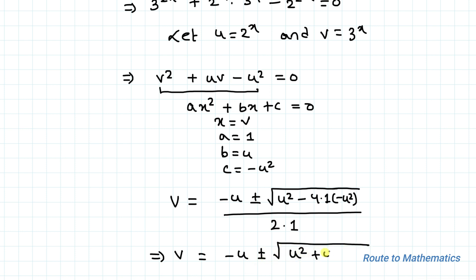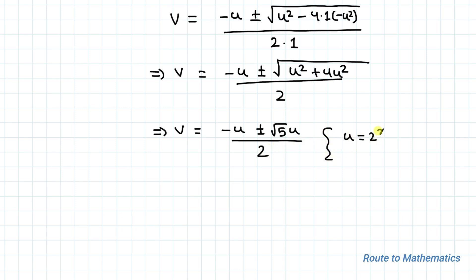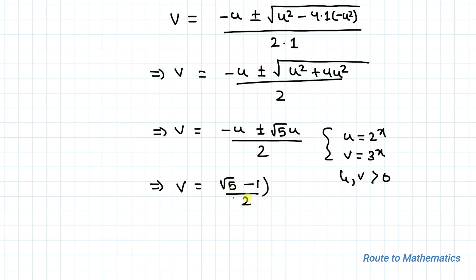...giving v = (√5 · u) / 2. Since u = 2^x and v = 3^x, both u and v must be greater than 0, so we can ignore the negative value. We have v = ((√5 − 1) / 2) · u.